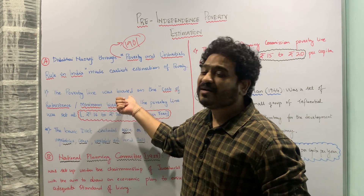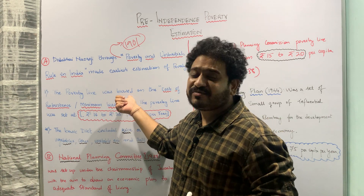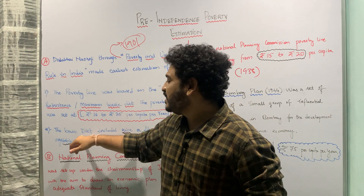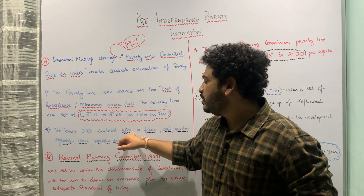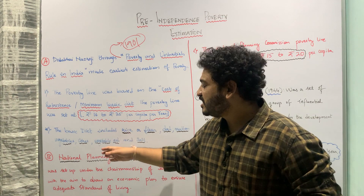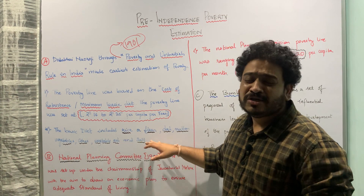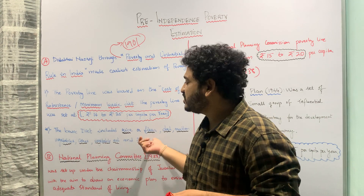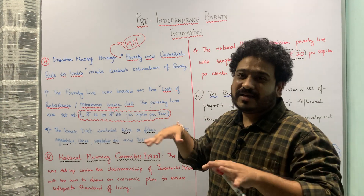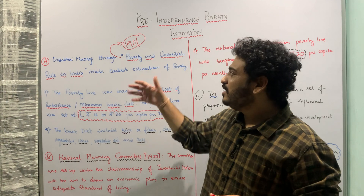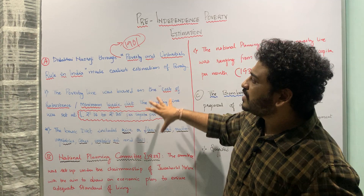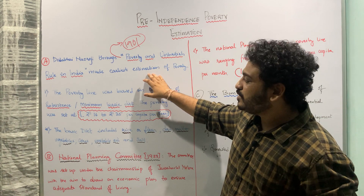The minimum basic diet was defined in terms of certain commodities. The basic diet included rice or flour or dal, mutton, vegetables, ghee, vegetable oil, and salt. These were the commodities listed by Dadabhai Naoroji to estimate poverty in 1901 in the Indian context.